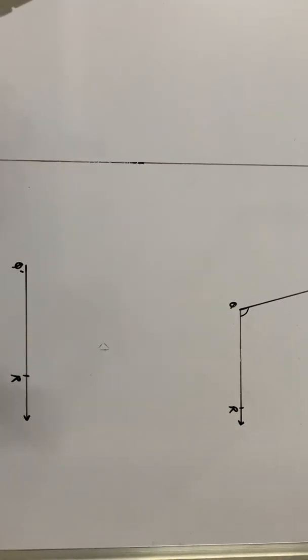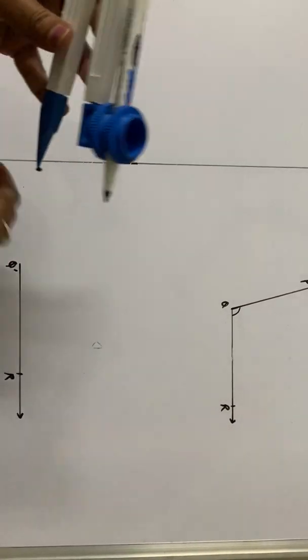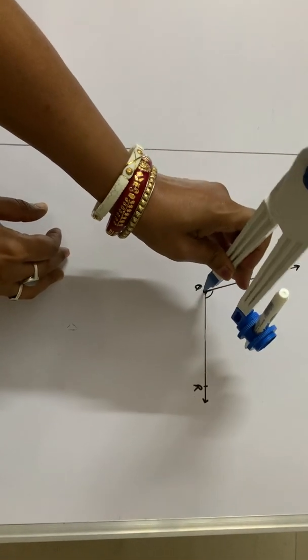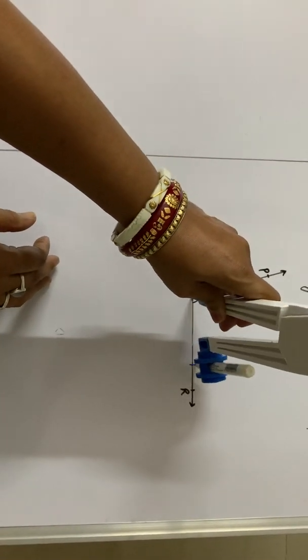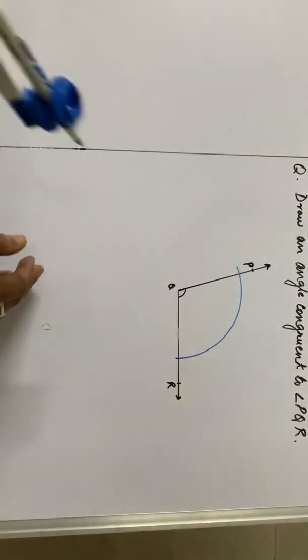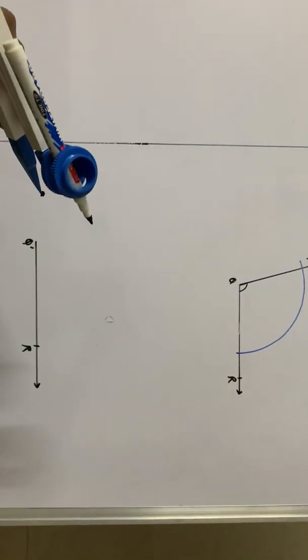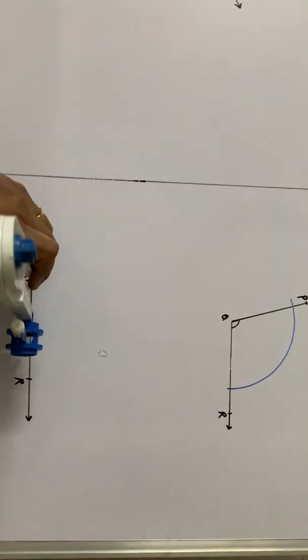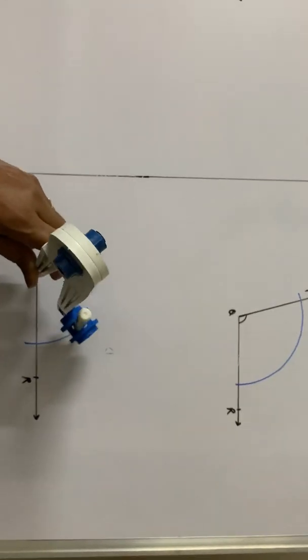Now, taking some distance in our compass, placing the pointer of the compass at the point Q, we will draw an arc. Without changing the distance, keeping the pointer at Q dash, here also we will draw an arc.